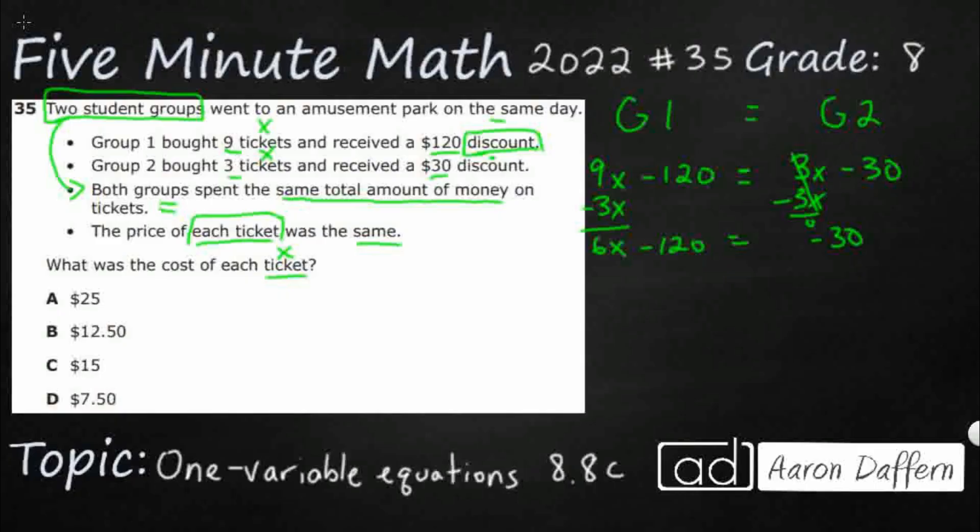Now I'm going to take care of the minus 120. I want to get rid of that so I can leave the 6X on its own. So the inverse operation is positive 120 or add 120. Do that to both sides. That's going to cancel itself out. So I'm going to end up with 6X equals, let's see, negative 30 plus 120. It's kind of the same as 120 minus 30. So that's going to be 90.